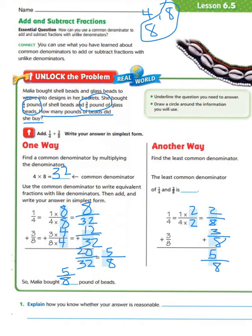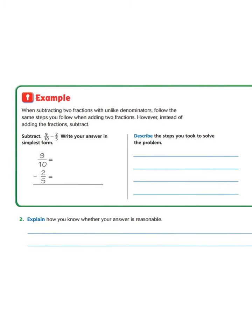Explain how you know whether your answer is reasonable. We can estimate the sum: zero plus one-half equals one-half. Since five-eighths is close to one-half, the answer is reasonable. Now let's take a look at another example. When subtracting two fractions with unlike denominators, follow the same steps you follow when adding two fractions — however, instead of adding, subtract. We're going to subtract nine-tenths minus two-fifths and write our answer in simplest form.